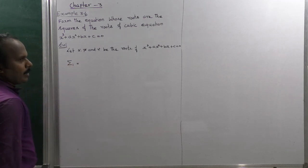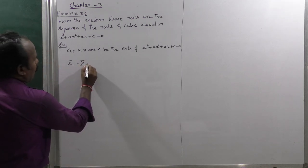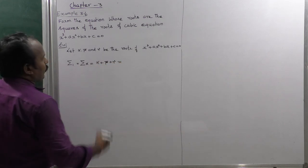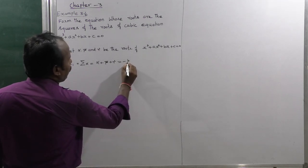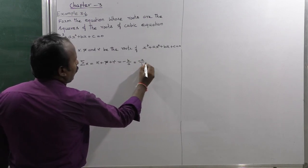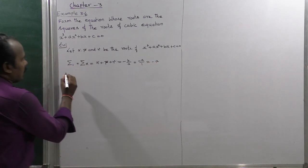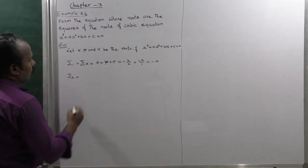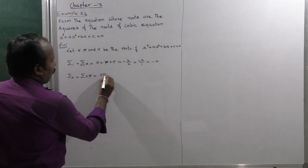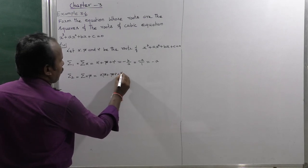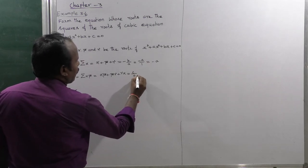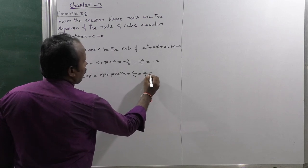Summation 1: alpha + beta + gamma equals minus b divided by a. Here a is 1, so it equals minus a. Summation 2: alpha·beta + beta·gamma + gamma·alpha equals c divided by a, where c is replaced by b, giving b divided by 1, which equals b.